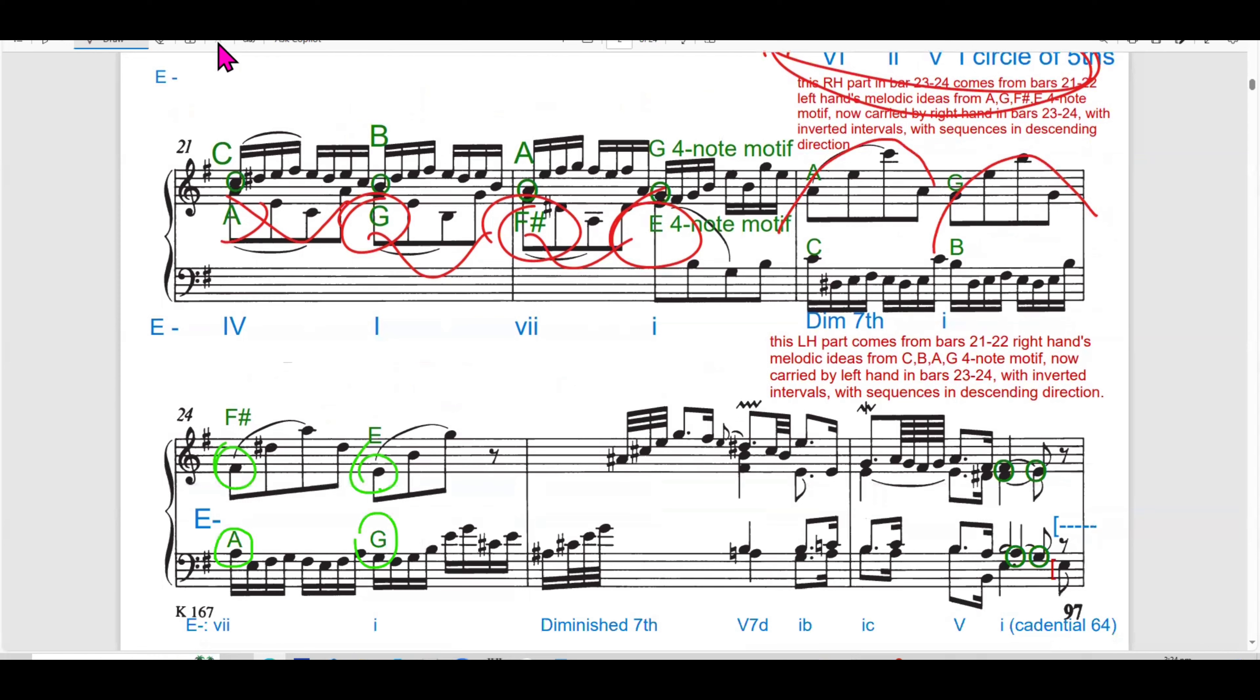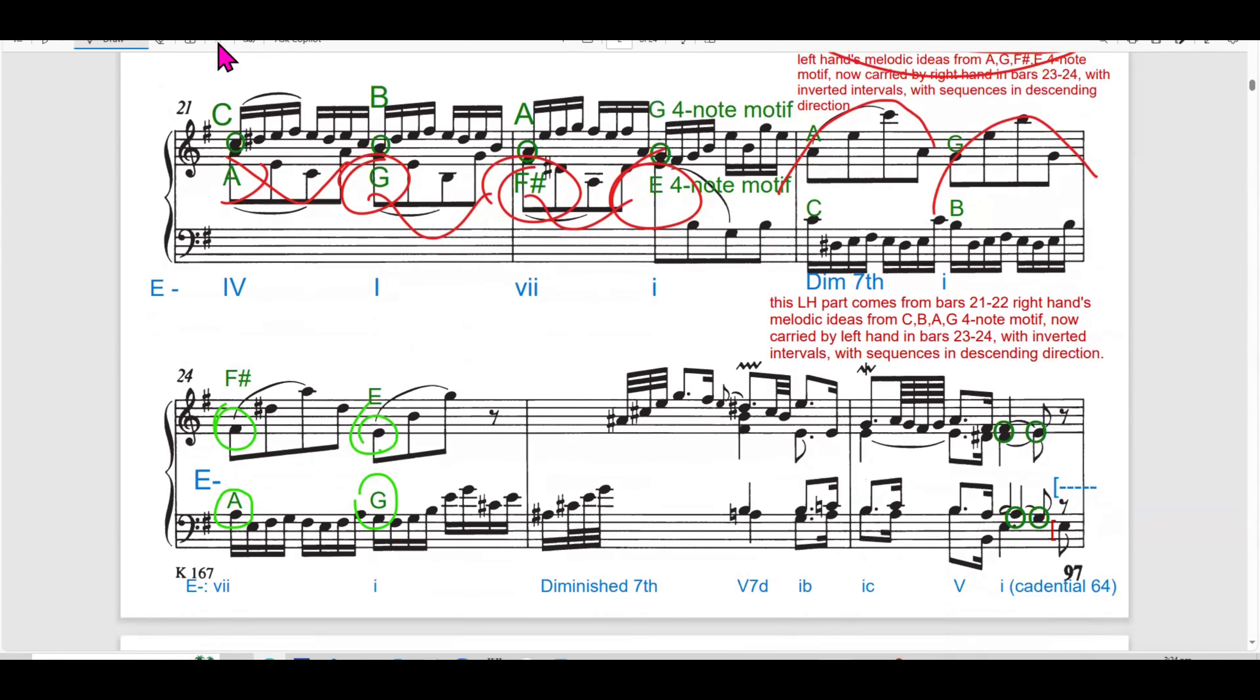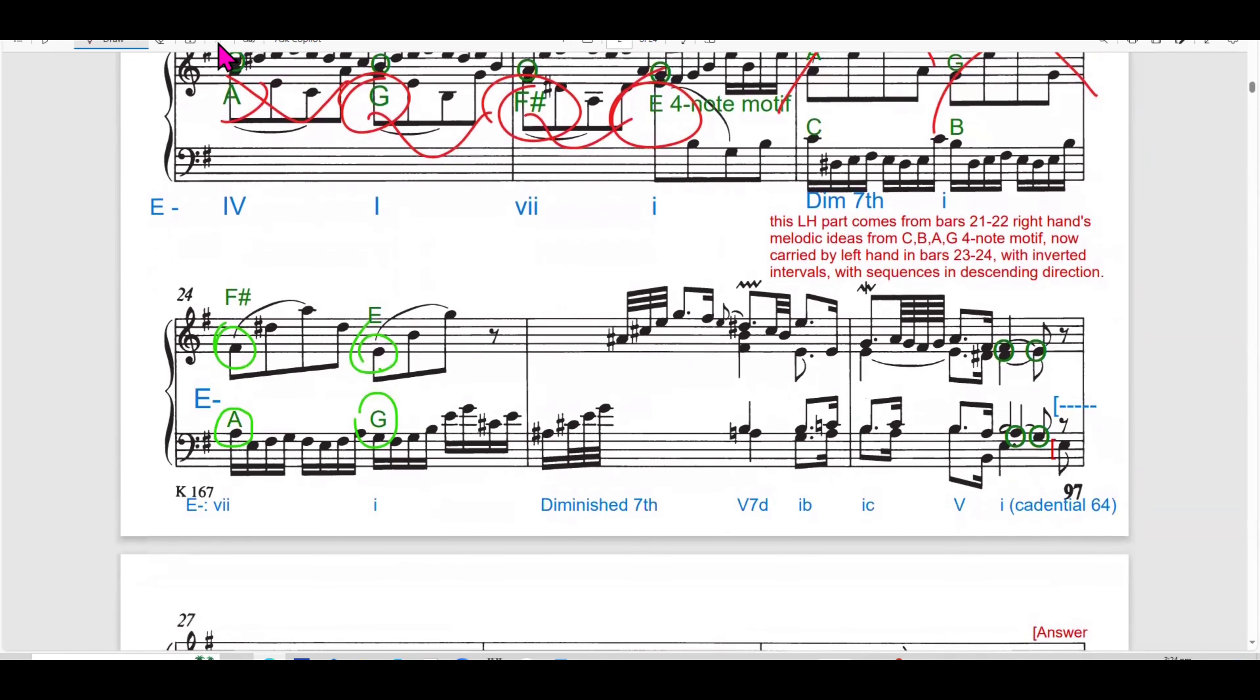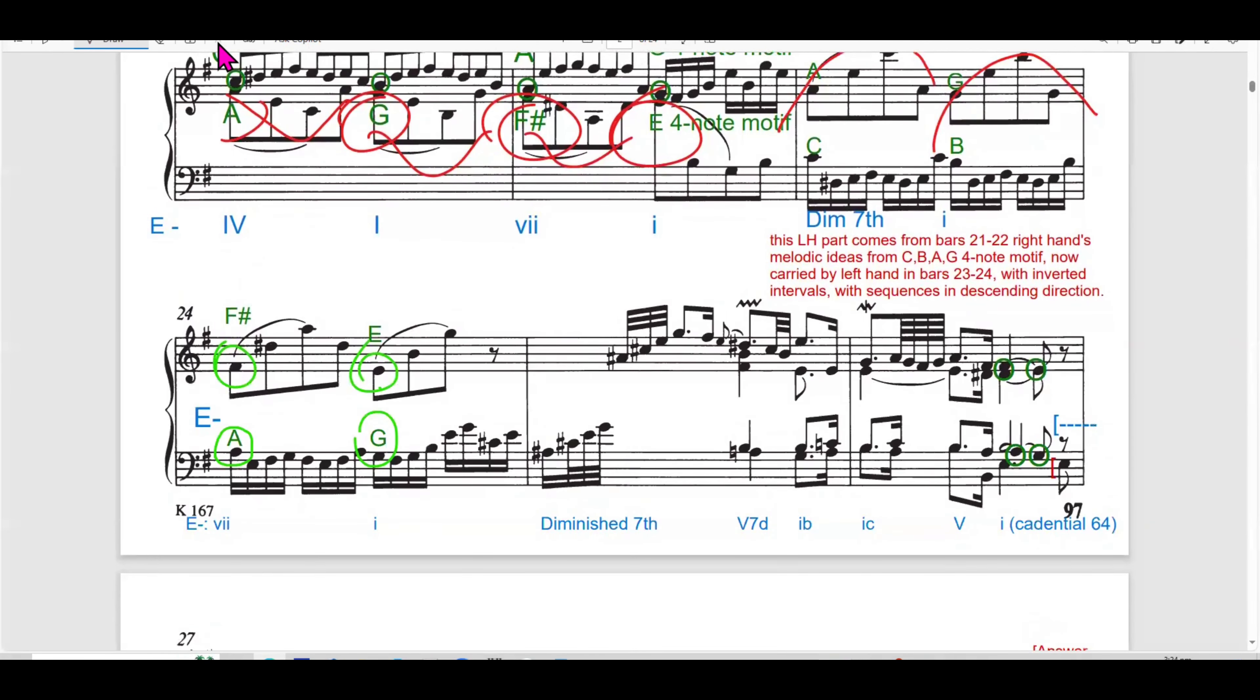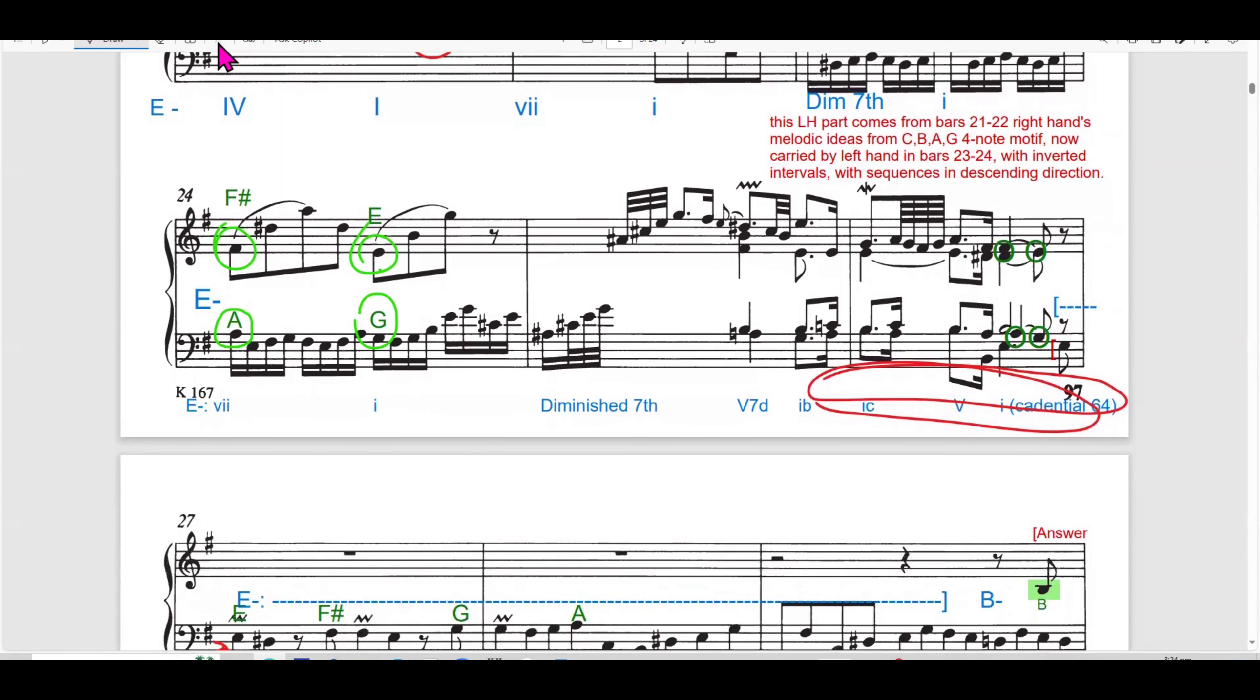Sorry, it is in the right hand, C, B, A, G is in the right hand and the left hand presents the A, G, F-sharp, E. The harmonic moves through 4, 1, 7, 1, diminished 7 to confirm the E minor as the key. By employing melodic imitation, Bach creates a sense of cohesion and continuity while developing the thematic material. In bar 23 to 24, the right and left hand continues to exchange melodic ideas. This time, it is inverted intervals.